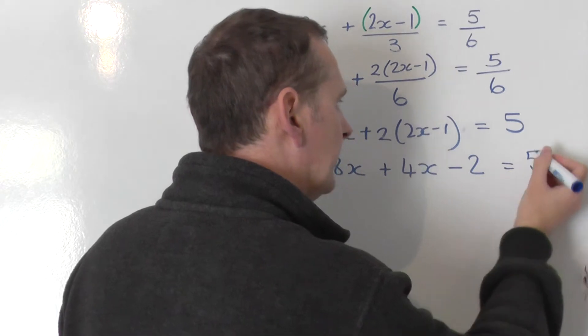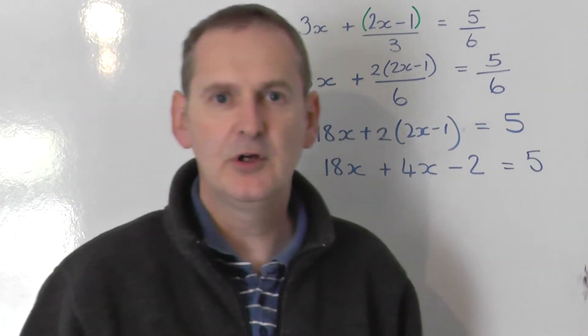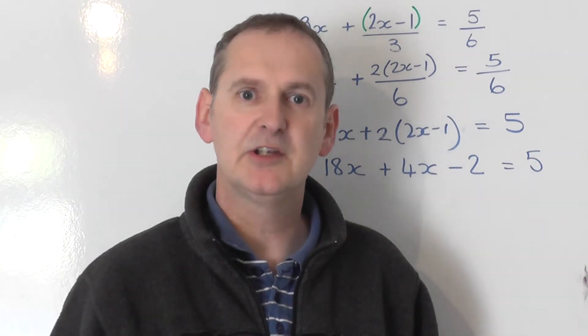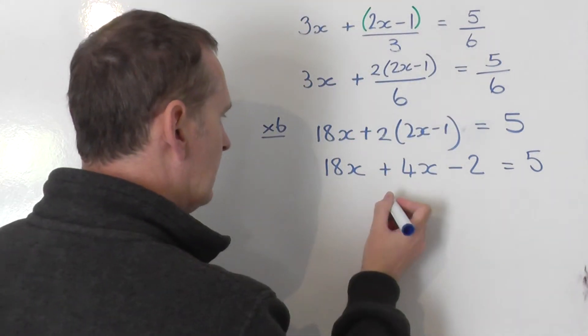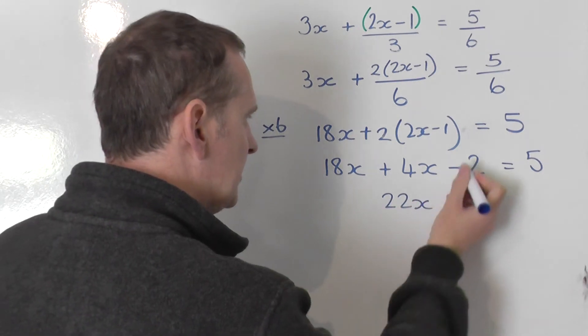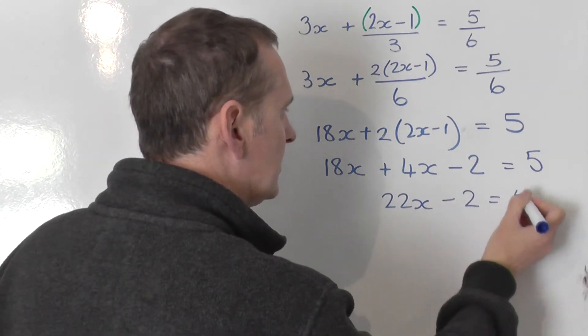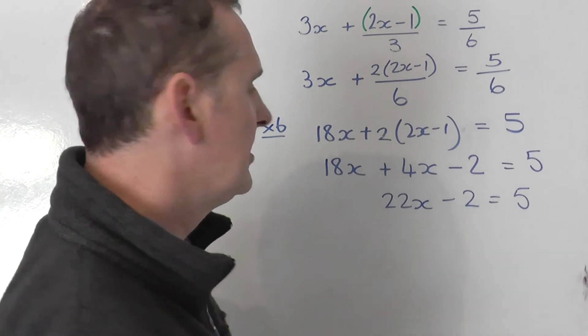Equals, and leave the 5 unchanged. So I've got now an equation with no brackets or fractions present. Let's tidy up a bit on the left. I've got 18x plus 4x, that's 22x's. Take away 2 is equal to 5 on the right.